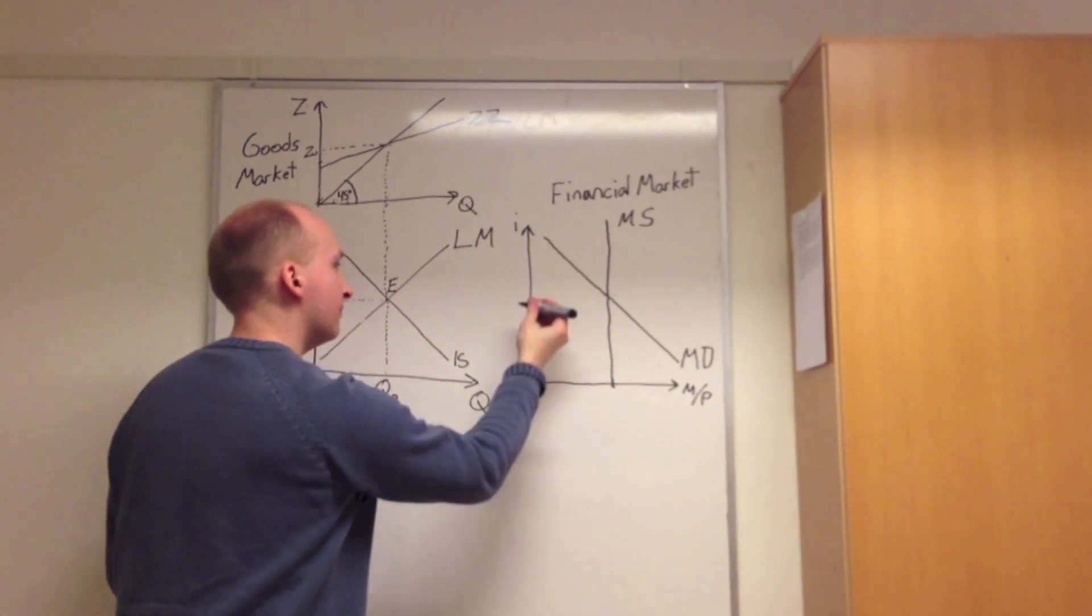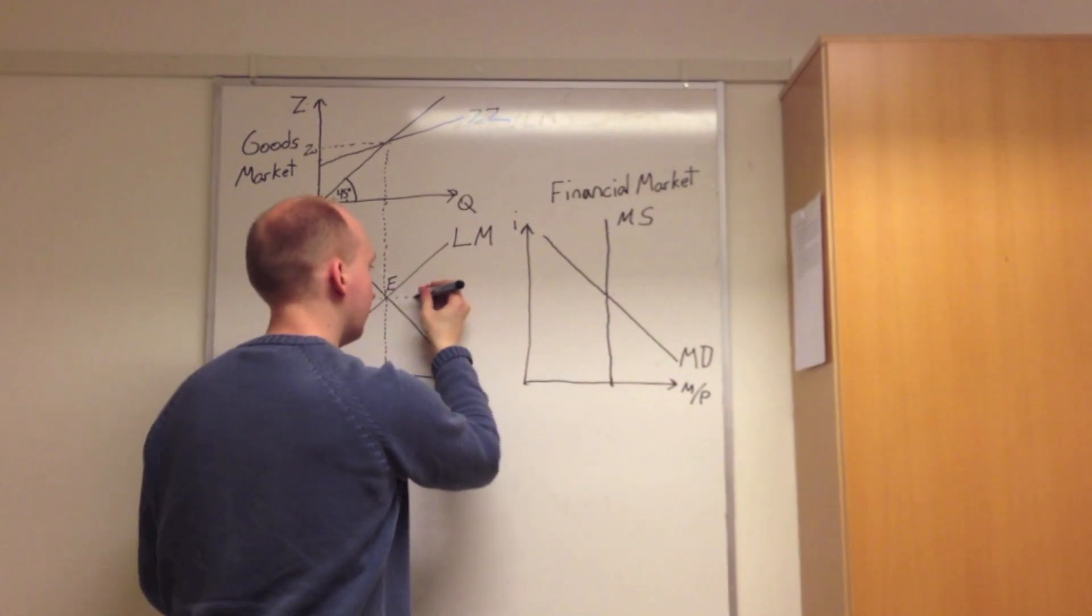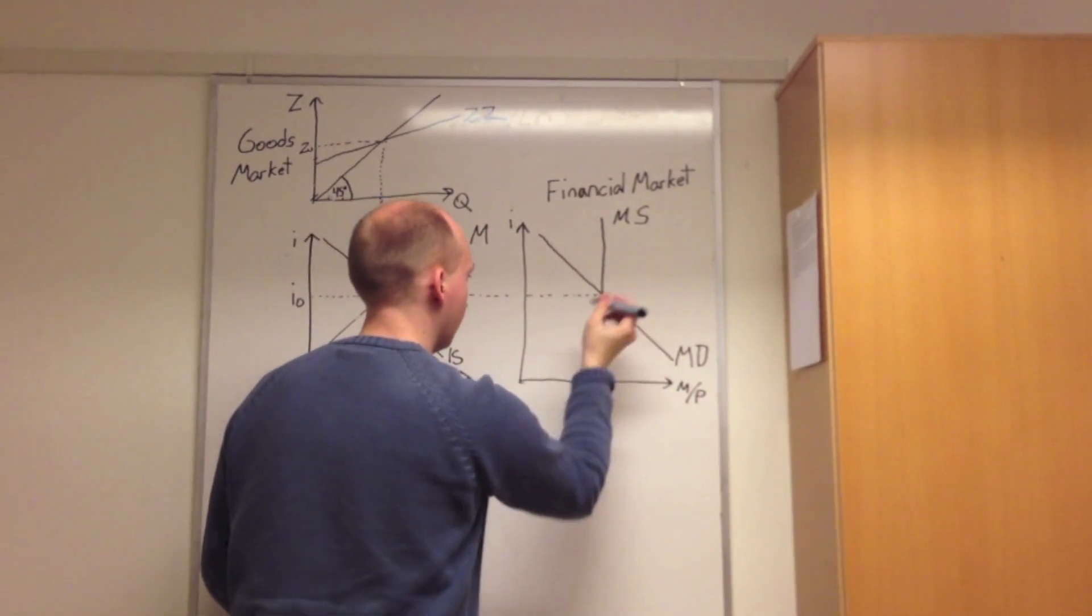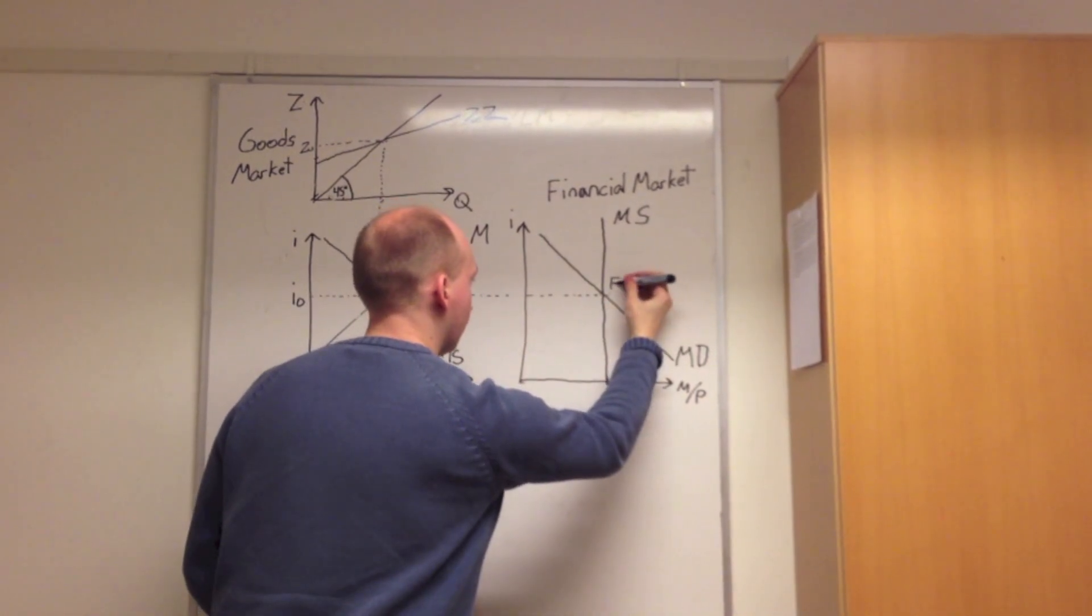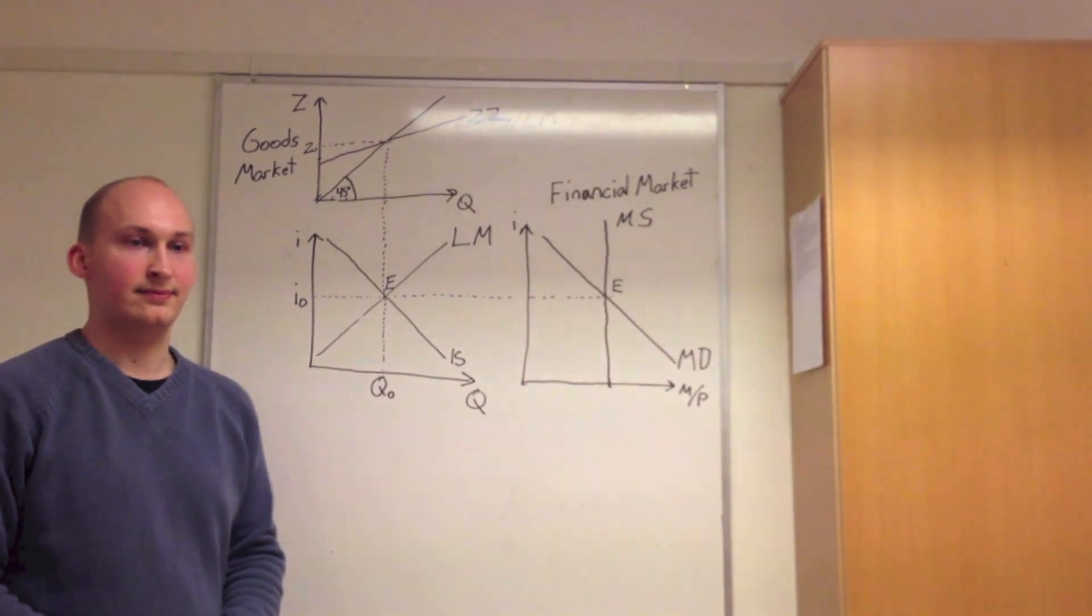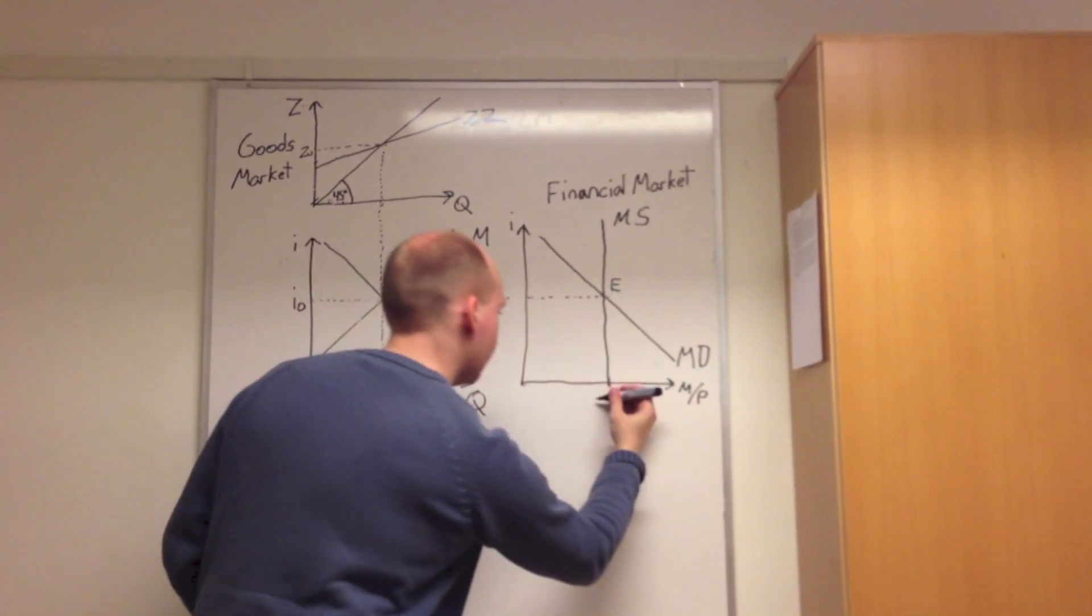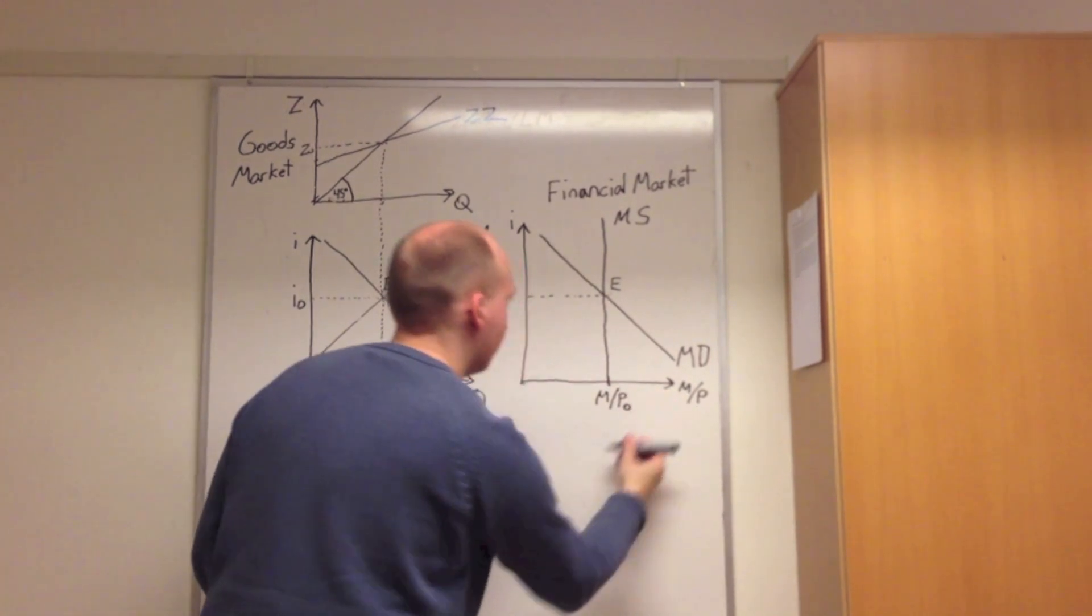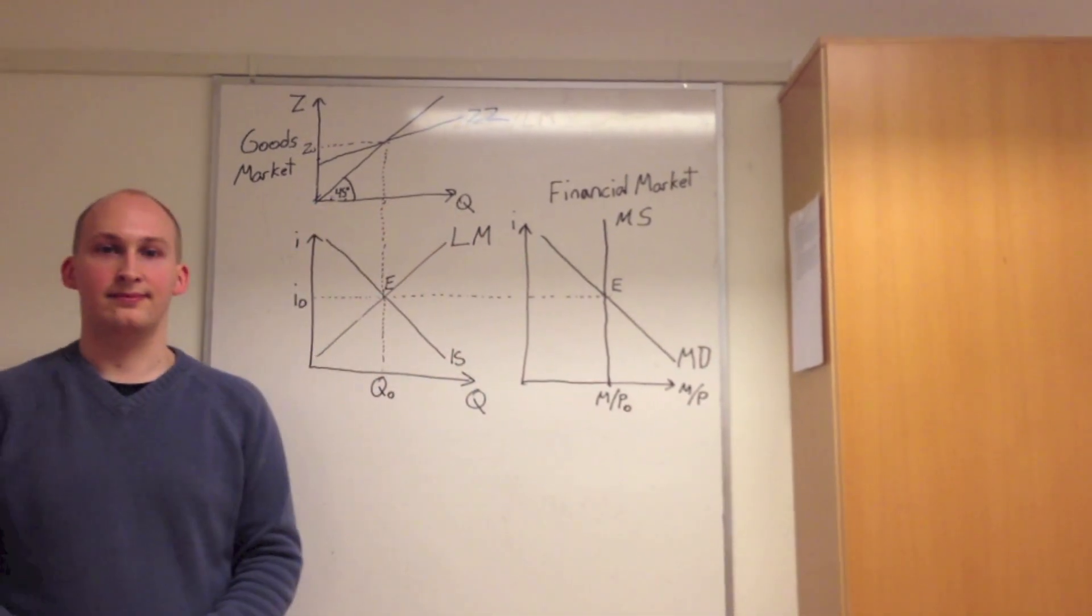The intersection of these two curves gives us our equilibrium in the financial market, where this intersection must equal the total equilibrium in the IS and LM curves. And we finish off by deriving M over P0, which is the initial value for the total money stock.